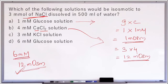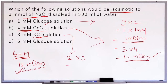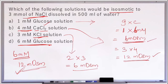A 6 millimolar sodium chloride solution and a 4 millimolar calcium chloride solution have similar osmolarity, so they are isosmotic. Potassium chloride gives 2 particles on dissociation; multiplied by its concentration gives 6 milliosmoles — hyposmotic. A 6 millimolar glucose solution gives 6 milliosmoles — also hypoosmotic. So we calculate osmotic strength by comparing number of osmotically active particles using the formula G into C.